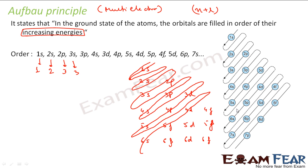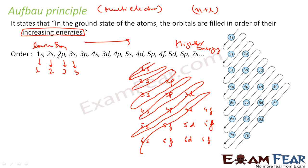Lower energy orbitals are filled first, then higher energy ones, and it goes on. This is the first principle — the Aufbau principle — which states that lower energy orbitals get filled first and then the higher energy ones.